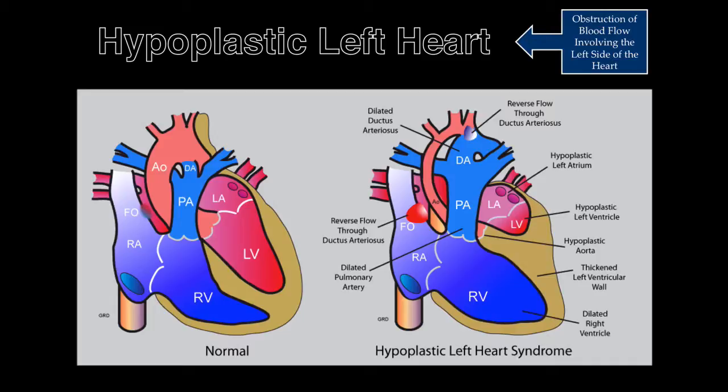Cases have been reported in which the four-chamber view appeared to be normal during the second trimester examination of the heart, only to have a hypoplastic left ventricle at birth.